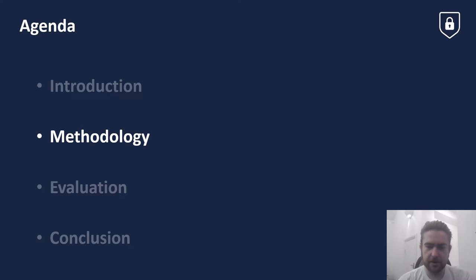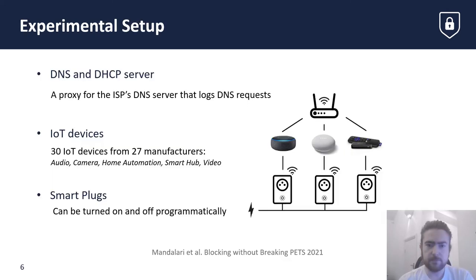Our experimental setup consists of a DNS and DHCP server, which run on a local network. The IoT devices under test comprise 30 different products from 27 different manufacturers, chosen for their popularity and prevalence in households. The power to each IoT device can be turned on and off individually through smart plugs, which can be controlled through a series of support scripts.